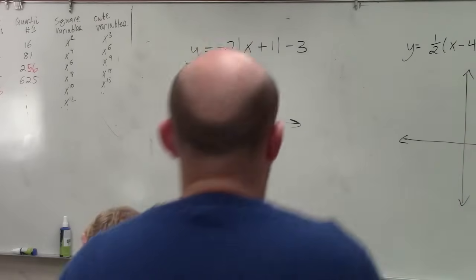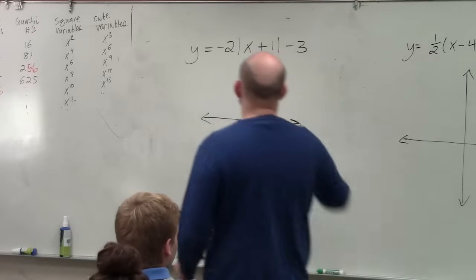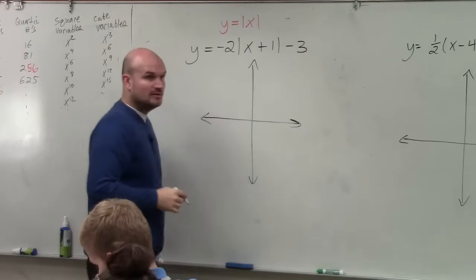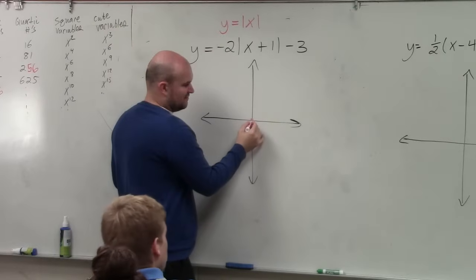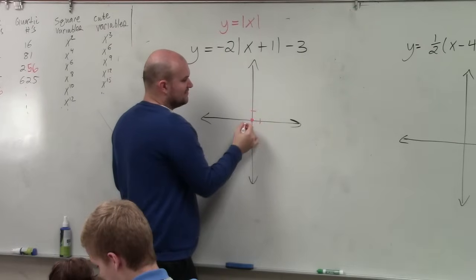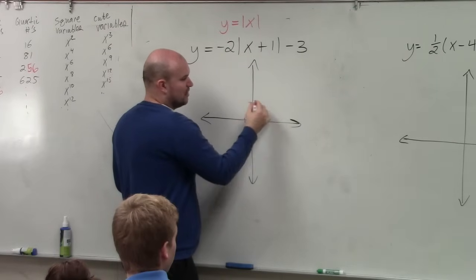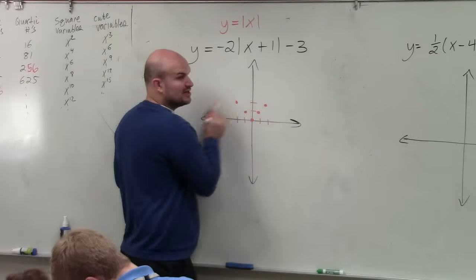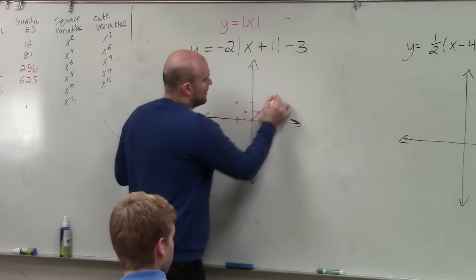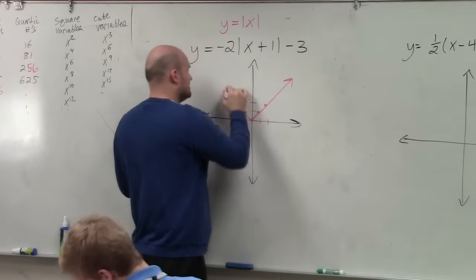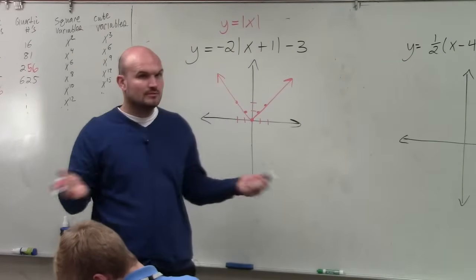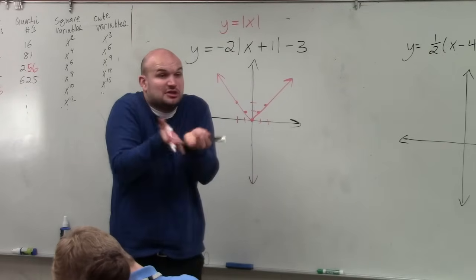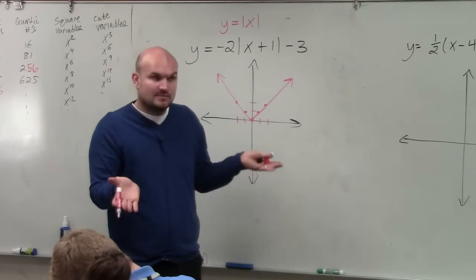So in graphing absolute value, the main important thing you need to understand is what the absolute value graph looks like. We've talked about this in our first unit. The absolute value graph was basically what we called that V-graph. I'm not going to create a table because we already did that in our notes, but that is what the absolute value does. We know the graph is going to look like a V because it's absolute value.